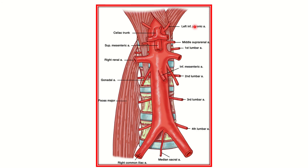In this picture, this one image is enough to realize all the criteria of the question. Here we can see the most inferiorly seated artery — this is the median sacral artery. It is the most inferiorly seated and it is a single branch. We can see other branches are paired branches, so they will not be the answer.